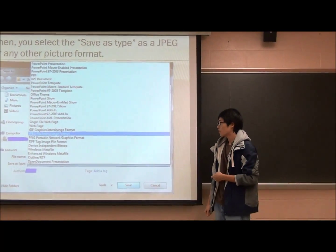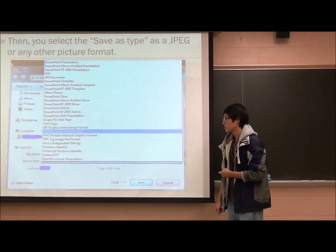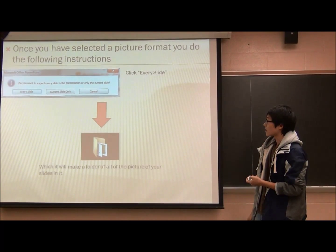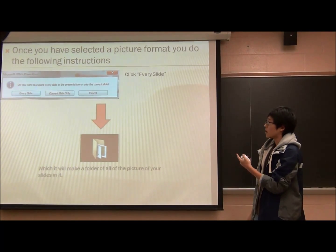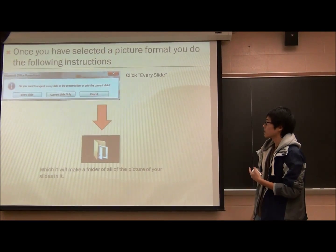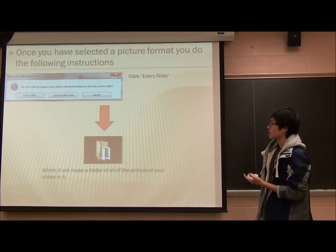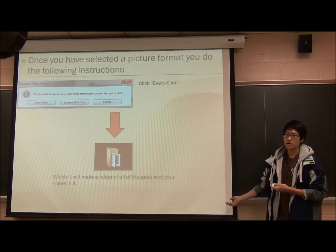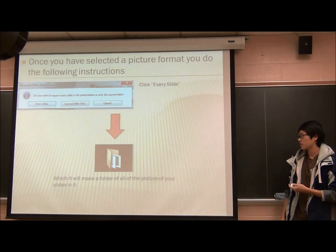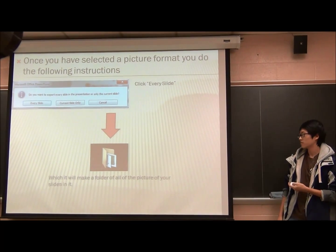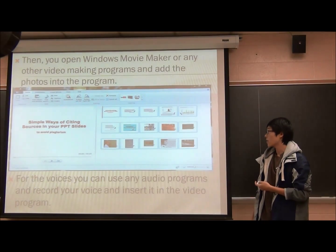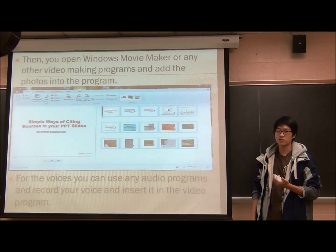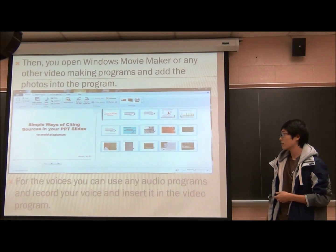So it could be a JPEG or a PNG — it doesn't matter which one you use. And once you click that, a pop-up is going to come, and then you just click Every Slide. And then it's going to make a folder on your desktop with your title of your PowerPoint, and it's going to include every picture that you have on your slide.